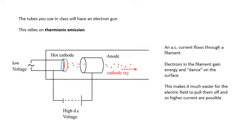Okay, so an AC current flows through the filament, and then electrons in the filament gain energy, and you can think about them dancing on the surface - so lots of electrons dancing on the surface of the filament.